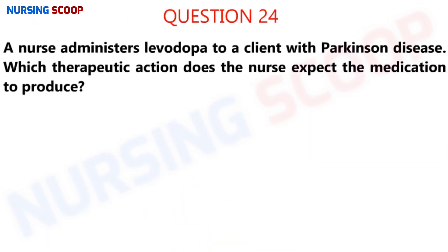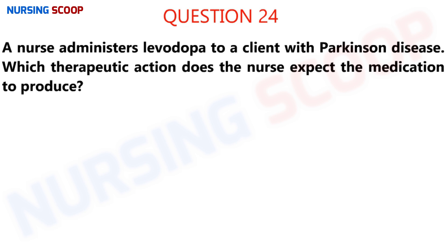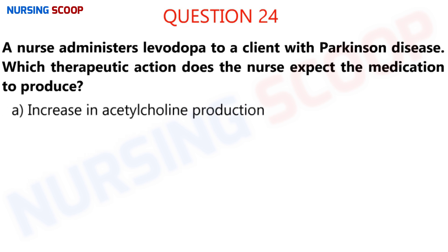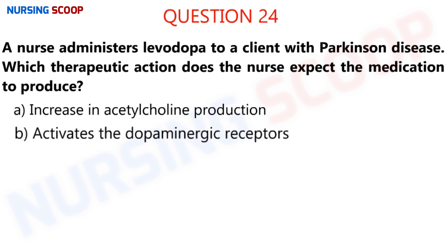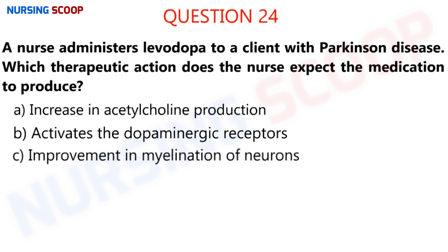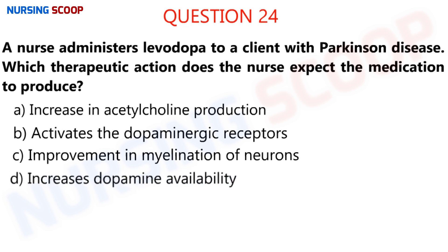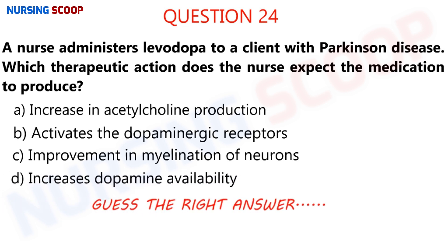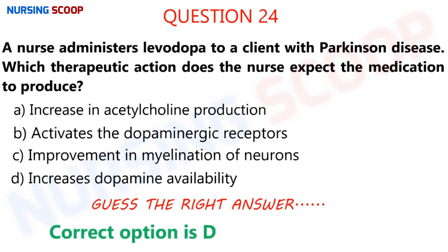Question number 24: A nurse administers levodopa to a patient with Parkinson's disease. For which clinical action should the nurse expect the medication to produce? Option A is increase in acetylcholine production. Option B is activation of dopaminergic receptors. Option C is improvement in myelination of neurons. Option D is increases dopamine availability. The right answer is D.